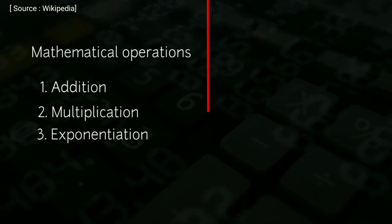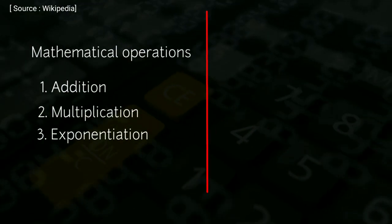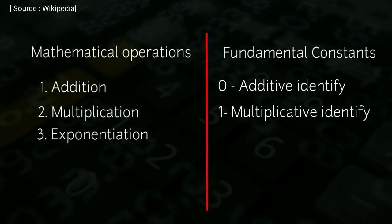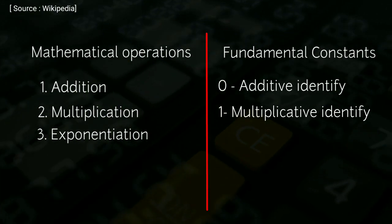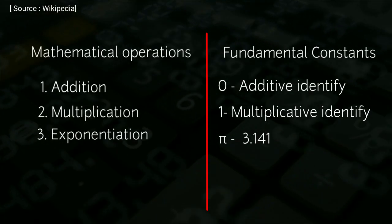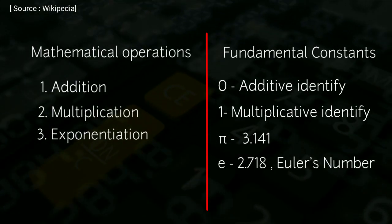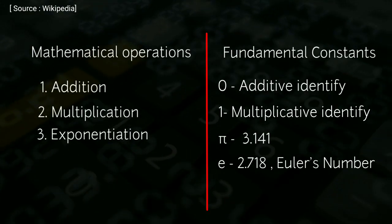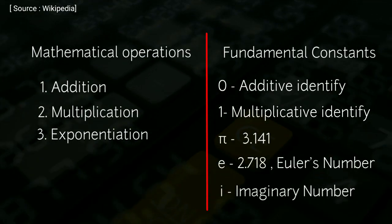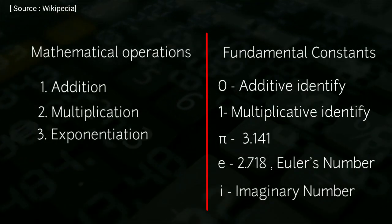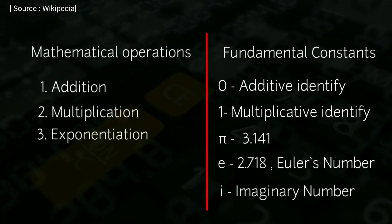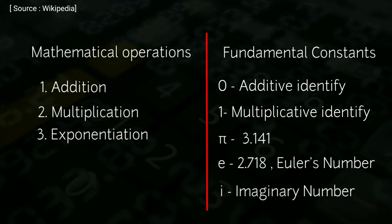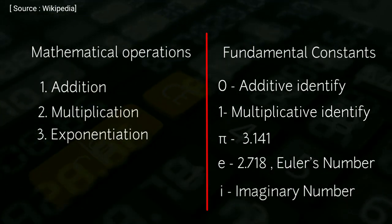The identity also links five fundamental mathematical constants: the number zero, the additive identity; the number one, the multiplicative identity; the number pi, approximately 3.141; the number e, approximately 2.718, Euler's number, which occurs widely in mathematical analysis; and the number i, the imaginary unit of the complex numbers. Furthermore, the equation is given in the form of an expression set equal to zero, which is common practice in several areas of mathematics.